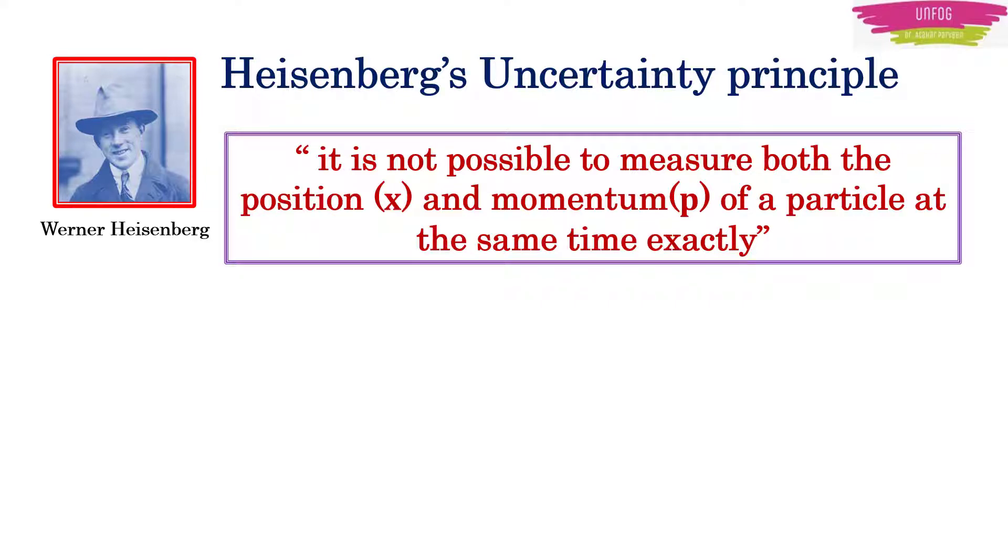it is not possible to measure both the position and momentum of a particle exactly at the same time. There is always some uncertainty in specification of position and some uncertainty in specification of momentum. Mathematically, the product of uncertainty in position and momentum is either greater than or equal to h/(4π) where h is the Planck's constant.